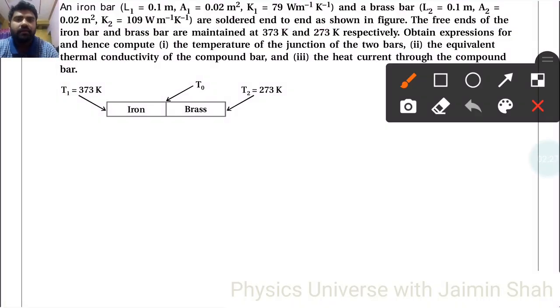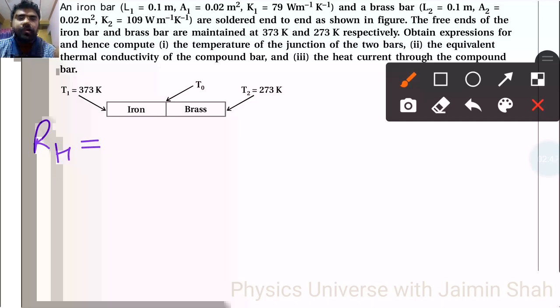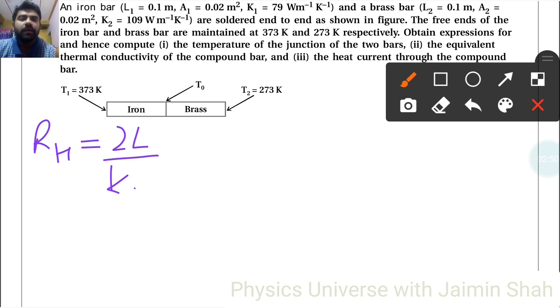Now second, the equivalent thermal conductivity of the compound bar. For equivalent, that is RH is equal to 2L upon K, A. This is for equivalent, so total length is 2L. Then RH1 is equal to L1 upon K1 A. RH2 is equal to L1, both are same, L1 is nothing but L.